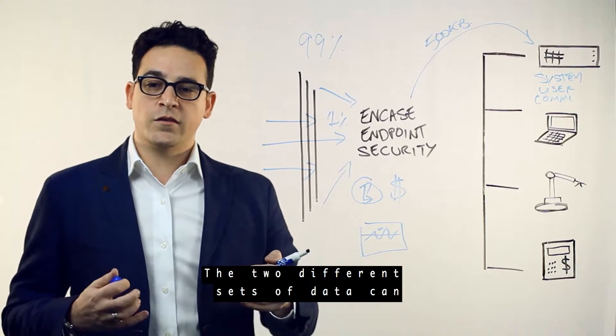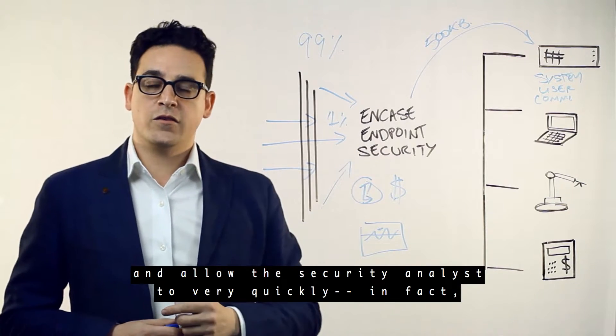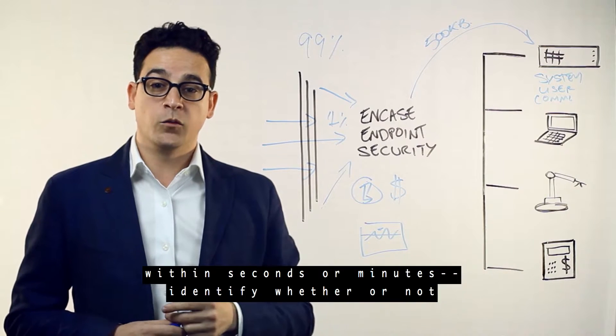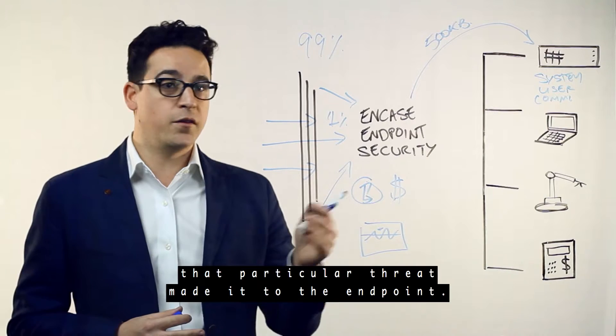The two different sets of data can be used to correlate what's actually happened and allow the security analyst to very quickly, in fact within seconds or minutes, identify whether or not that particular threat made it to the endpoint.